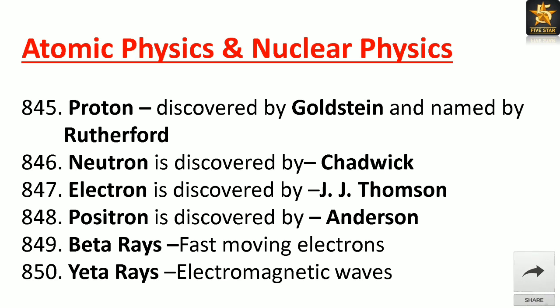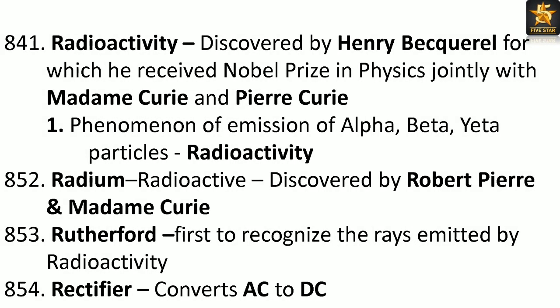Beta rays: fast-moving electrons. Gamma rays: electromagnetic waves. Radioactivity: discovered by Henri Becquerel, for which he received the Nobel Prize in Physics jointly with Madame Curie and Pierre Curie. It is the phenomenon of emission of alpha, beta, and gamma particles.